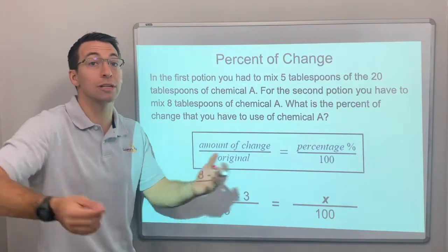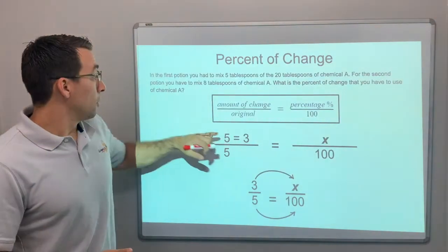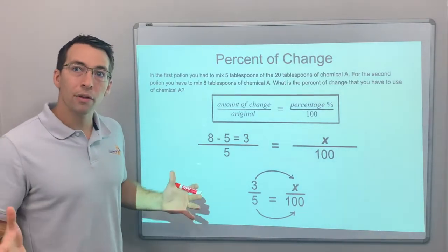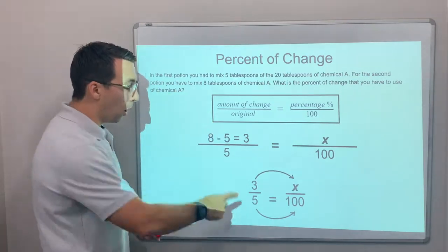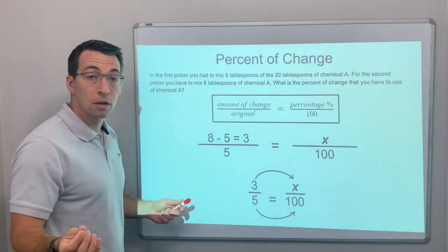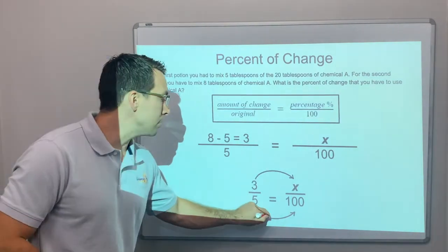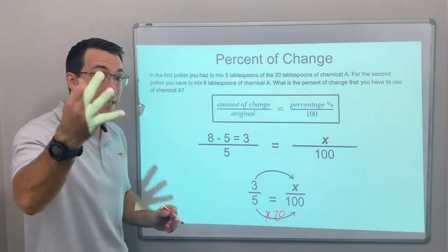So let's look at this: 3 over 5 equals x over 100. Well, we can think about scale factor. What am I doing? 5 times what equals 100? And if I do that to the bottom, I have to do it to the top. So 5 times 20, right? 20, 40, 60, 80, 100.